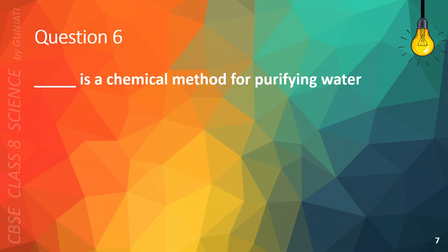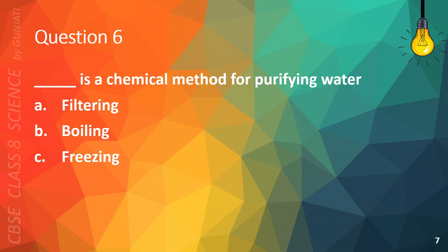Question 6. Blank is a chemical method for purifying water. A. Filtering. B. Boiling. C. Freezing. Or D. Chlorination.